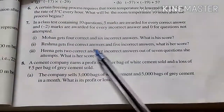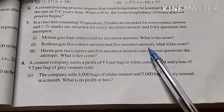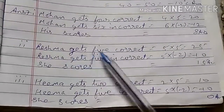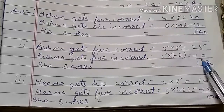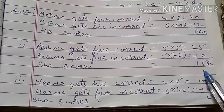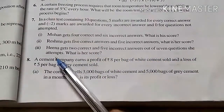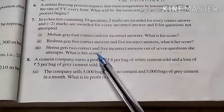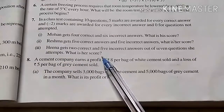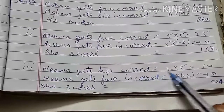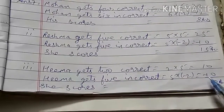Second: Mohan gets 5 correct and 5 incorrect answers. 5 multiply 5 equals 25. Rezma gets 5 incorrect: 5 multiply minus 2 equals minus 10. She scores 25 minus 10 equals 15. Third: Hina gets 2 correct and 5 incorrect answers out of 7 questions attempted. Hina gets 2 correct: 2 multiply 5 equals 10. Incorrect: 5 multiply minus 2 equals minus 10. She scores 10 minus 10 equals 0.